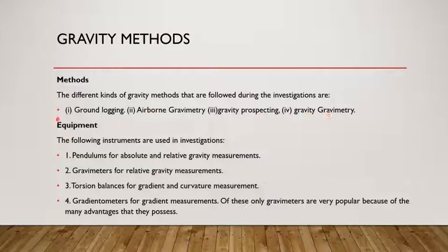The instruments used in the gravity methods are pendulum for the absolute and relative gravity measurements, gravity meter for relative gravity measurements, torsional balance for gradient and curvature measurements, gradiometer for gradient measurement. Of the above four instruments, gravimeters are very popular because of their advantages.